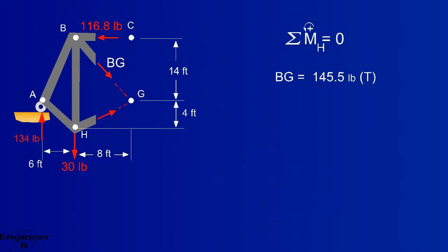The force is positive, which means that the direction of the vector is correct. The force is pointing on the member, so the member is in tension.